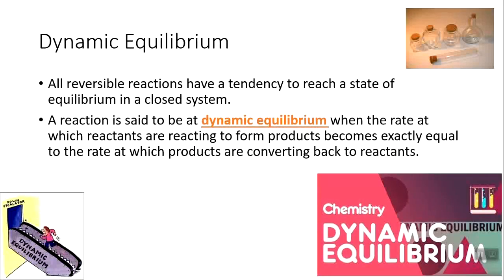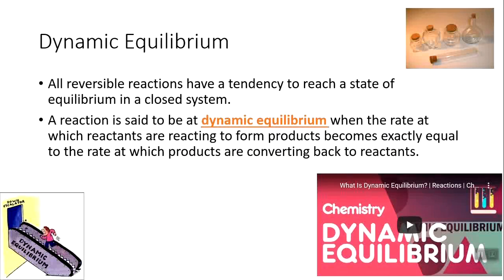Reversible reactions tend to reach a state of equilibrium in a closed system. A closed system means there's no exchange of matter, only exchange of energy. For example, if you're boiling water with a lid on the pot, that's a closed system — water evaporates from liquid to gas, and simultaneously condenses back from gas to liquid. That is also reaching dynamic equilibrium.